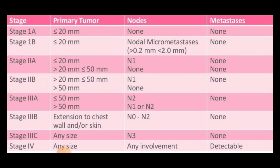Stage 2A is when the primary tumor size is less than 2 centimeters with less than 3 axillary lymph node involvement — that is T1 N1 — or when the primary tumor size is 2 to 5 centimeters with no nodal involvement — T2 N0. So stage 2A is T1 N1 or T2 N0. Stage 2B is when the primary tumor is 2 to 5 centimeters with N1 nodal involvement — T2 N1 — or primary tumor more than 5 centimeters with no nodal involvement — T3 N0.